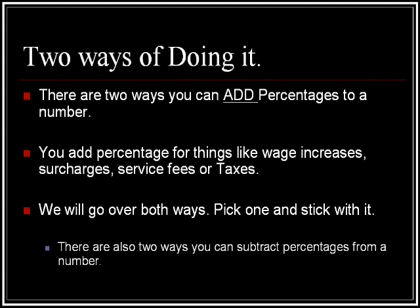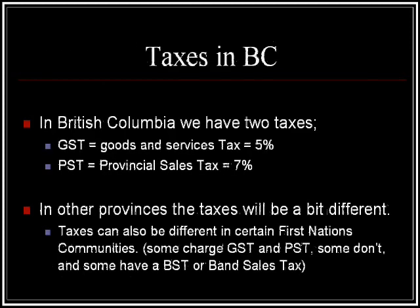We're going to go over both ways — I recommend you pick one and stick with it. There are also two ways to subtract percentages from a number. In BC we have two kinds of tax: GST, which stands for Goods and Services Tax — you should memorize that, it does show up on the exam — and Provincial Sales Tax, PST. GST is 5% and PST is 7%. In other provinces taxes will be different, and taxes can also differ in First Nations communities. Some places charge PST, some charge GST, some don't, and some bands have a band sales tax or council sales tax instead.